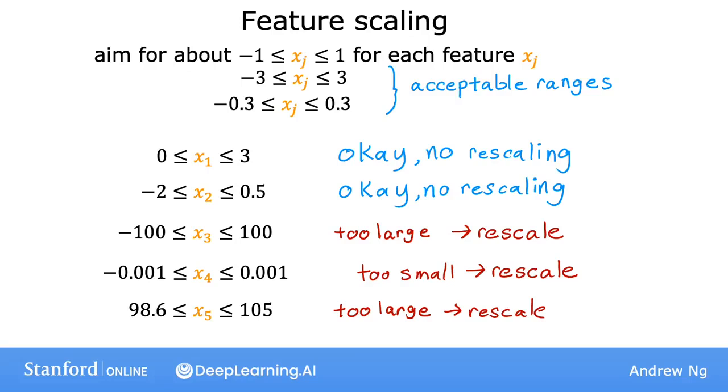And that's it for feature scaling. With this little technique, you'll often be able to get gradient descent to run much faster. So that's feature scaling. And with or without feature scaling, when you run gradient descent, how can you know, how can you check if gradient descent is really working? If it is finding you the global minimum or something close to it? In the next video, let's take a look at how to recognize if gradient descent is converging. And then in the video after that, this will lead to a discussion of how to choose a good learning rate for gradient descent.